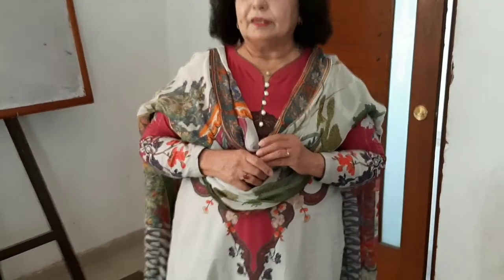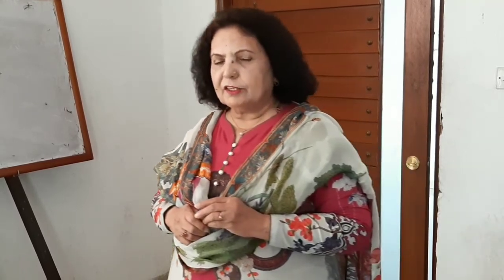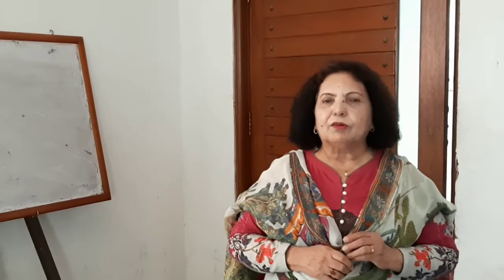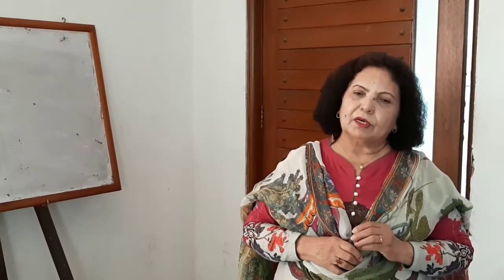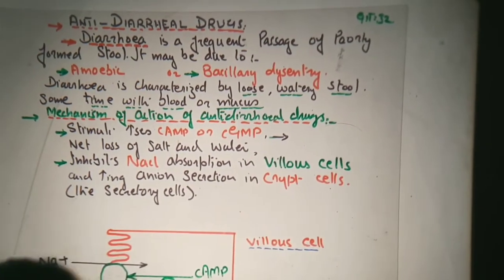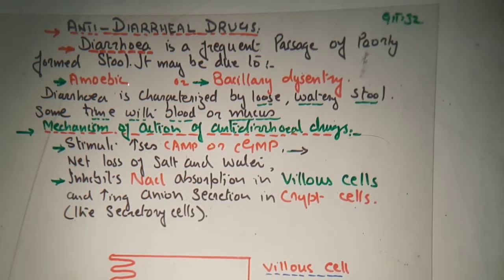Diarrhea is the frequent passage of poorly formed stool. By definition it can be known as the frequent passage of poorly formed stool, and it may be due to either amoebic or bacillary dysentery. These microorganisms — bacteria — act on the intestine and cause dysentery. Antidiarrheal drugs are those drugs which are used to prevent the frequent passage of poorly formed or loose stool.